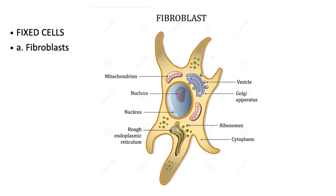Fibroblast looks like a stem cell; it has a large nucleus. In the resting phase, these cells appear spindle-shaped with tapering ends and are known as fibrocyte. Fibroblasts are active cells, usually active during wound healing. The nucleus of the fibroblast stains lightly. These cells are found in all types of connective tissue and are responsible for production of extracellular components — fibers and ground substance.